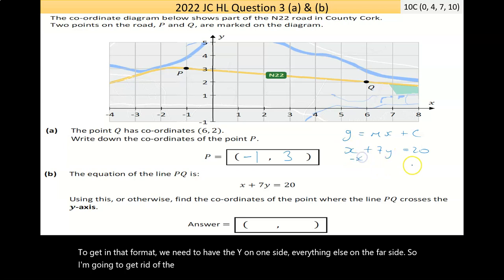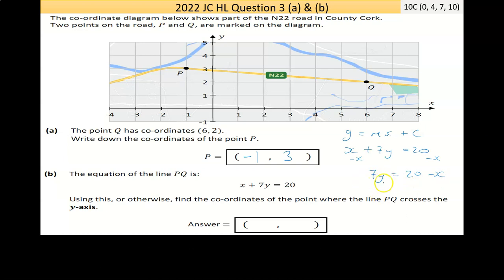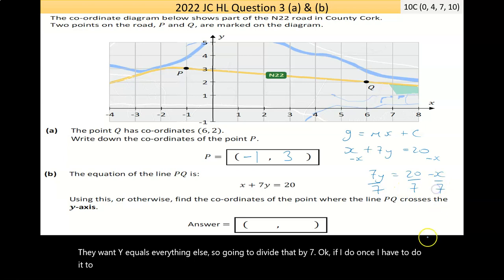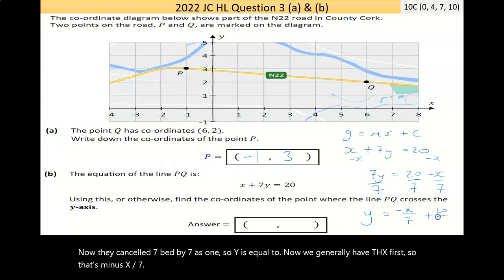It's not in that format at present. To get in that format, we need to have the Y on one side, everything else on the far side. I'm going to get rid of the X by taking it away. Do it to one side, have to do it to both. You end up with 7Y is equal to 20 minus X.